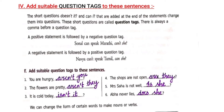Now let's do the exercise: add suitable question tags. 'You are hungry' — positive statement, so negative tag: 'aren't you.' 'The flowers are pretty' — positive statement: 'aren't they.' 'It is cold today' — 'isn't it.' 'The shops are not open' — negative statement, so positive tag: 'are they.' 'Mrs. Saha is not well' — negative statement: 'is she.' 'Abba never lies' — question tag is 'does she.'